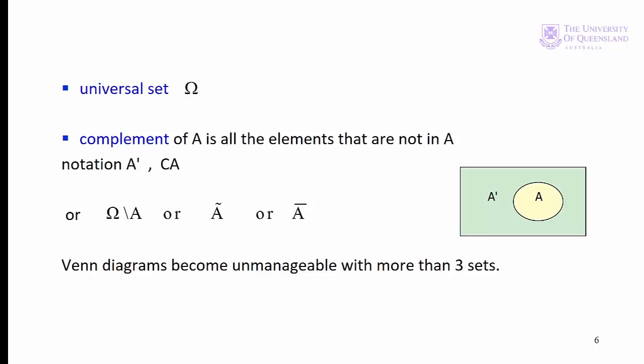We talked earlier about the null set. We also have the concept of a universal set. The symbol for a universal set is the Greek letter omega. It's not literally the set of everything — it's the set of everything that's of interest in a particular instance, so we define a universal set for each problem. For example, if we're considering students, the universal set might be all current UQ students. If we have a set A and a universal set omega, then the complement of A is the set of elements of omega that don't belong to A. We have various symbols for a complement: A prime, CA, omega not A, A tilde, or A bar.